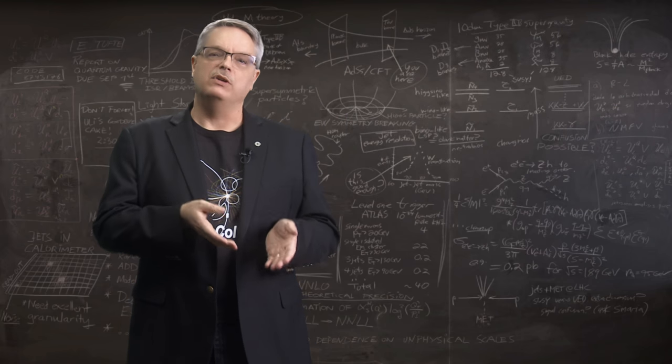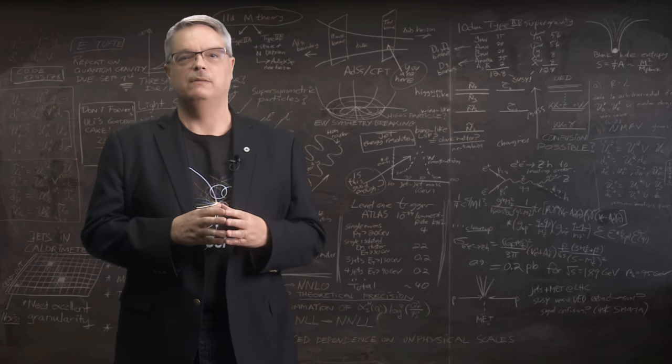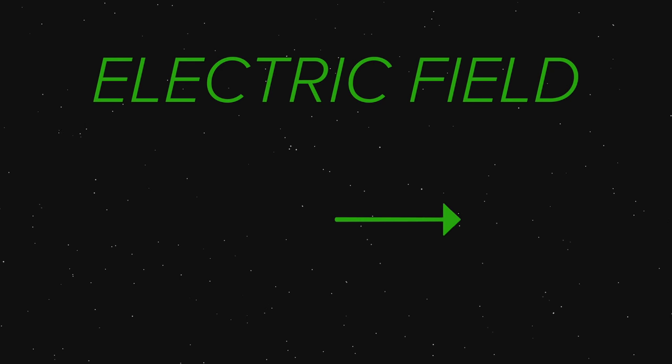It turns out that the electric field in most high energy particle accelerators isn't static like that. In fact, the electric field in a particle accelerator is actually oscillating. It starts out at zero, then pushes a charged particle in one direction, then pushes it in the opposite direction. The pattern repeats itself over and over and over again.